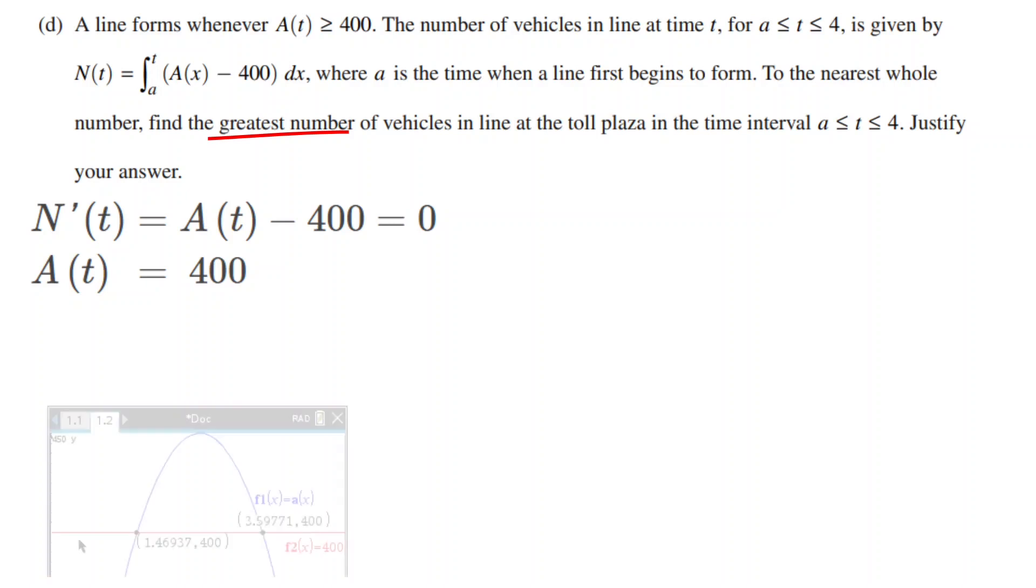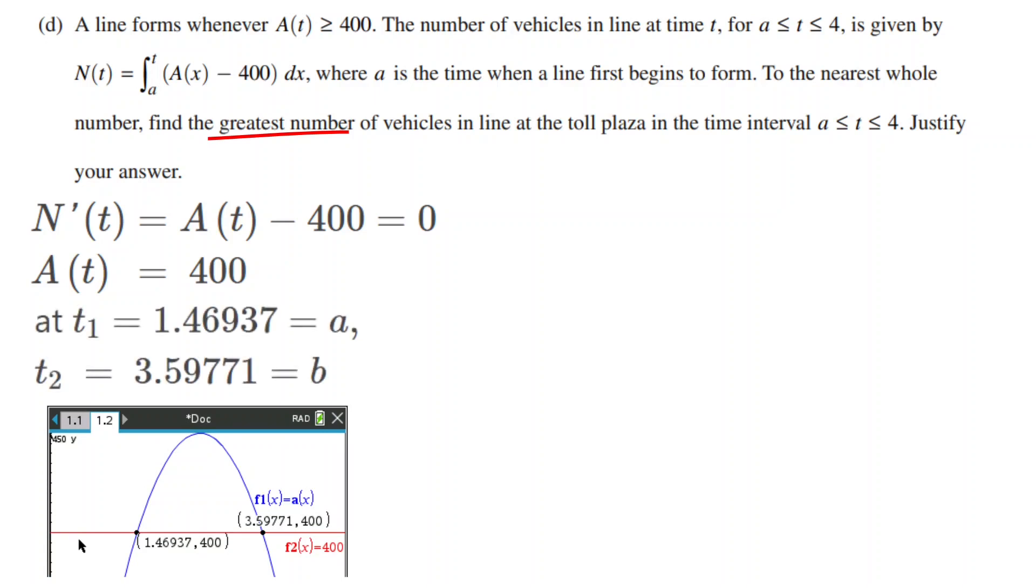On our graphing calculators, we can graph A(t) and the line y equals 400 and find the critical points by identifying the intersections. They are t1 equals 1.46937 and t2 equals 3.59971.